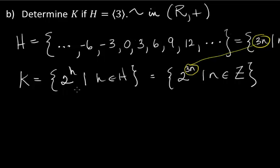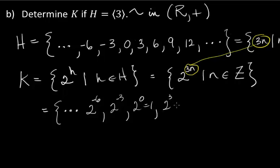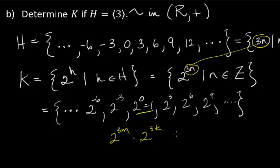If you didn't do that, you might write it another way: 2 to the minus 6, 2 to the minus 3, 2 to the 0 which is 1, 2 cubed, 2 to the 6th, 2 to the 9th, etc. You could have just written K out that way, but characterizing the exponent as a multiple of 3 makes it easier. That's the answer, and notice it is indeed a subgroup: you have the identity, and if you take 2 to the 3M times 2 to the 3K, you get 2 to the 3 times (M plus K), so you can see it is a subgroup.